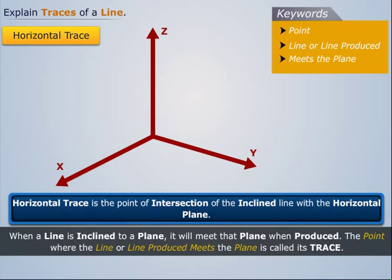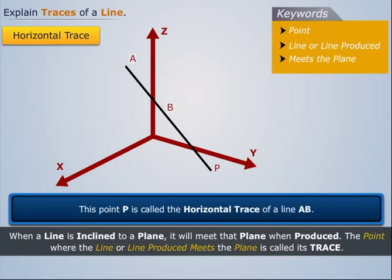For example, consider a line AB in space. Let us extend this line to meet the plane YZ. Let this extended line meet the plane at point P. This point P is called the horizontal trace of a line AB.